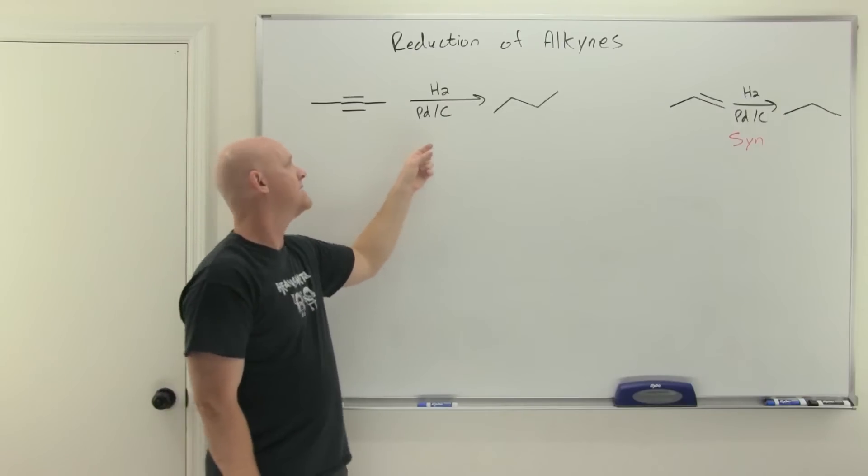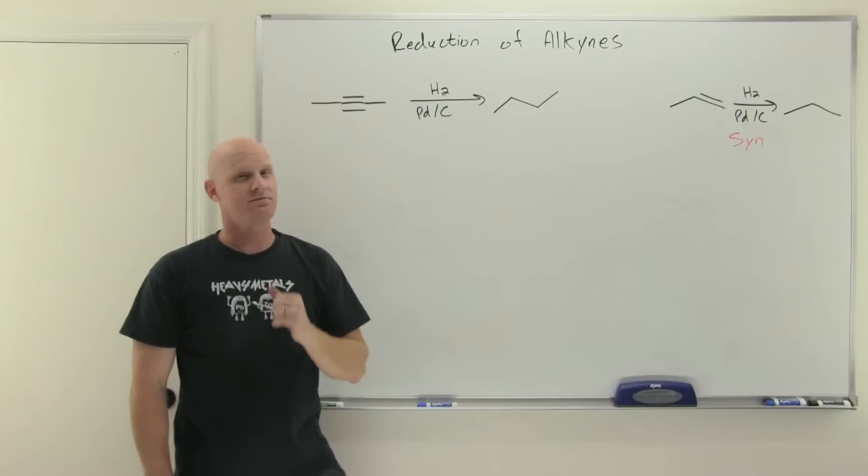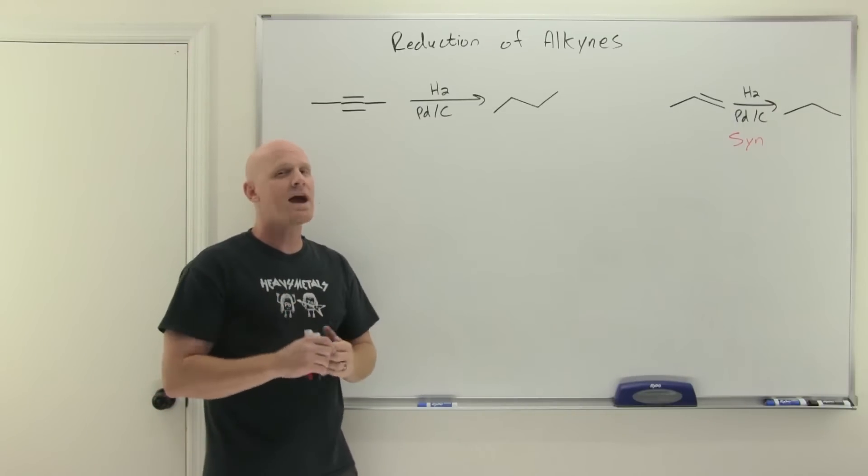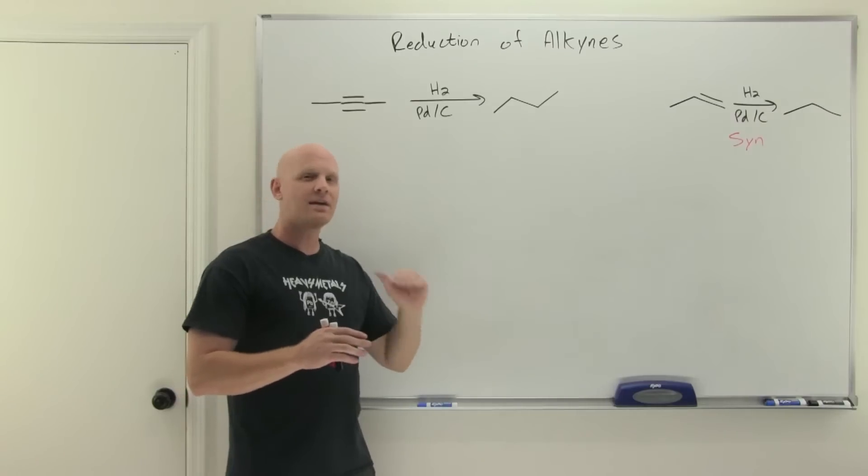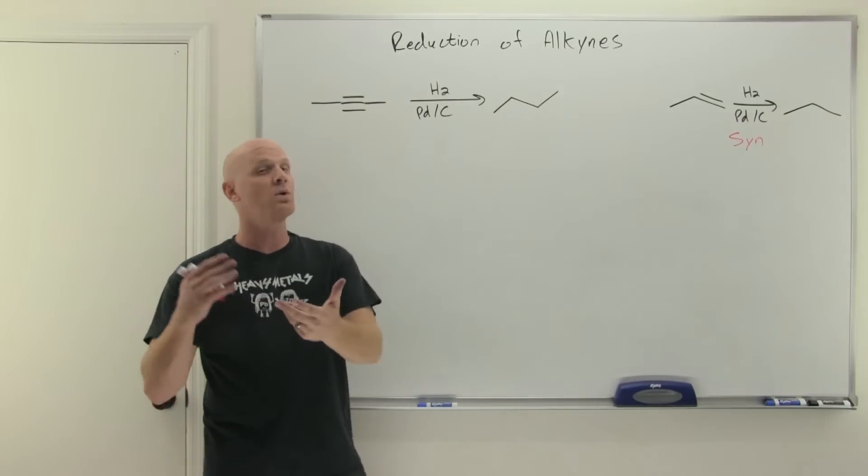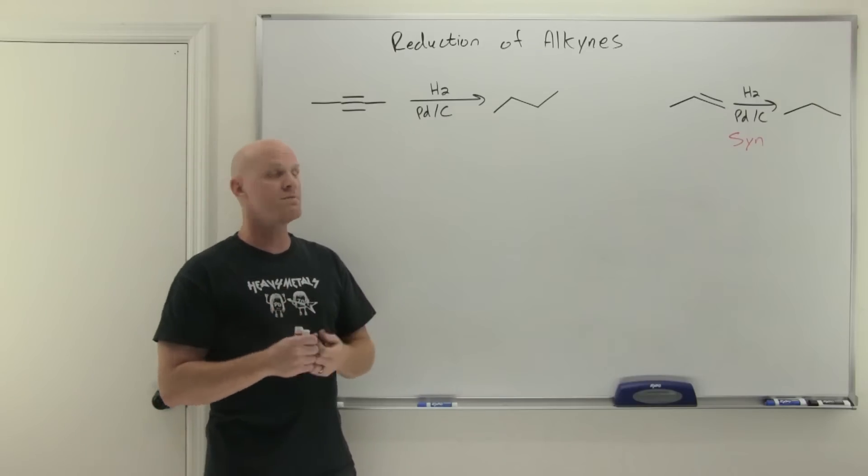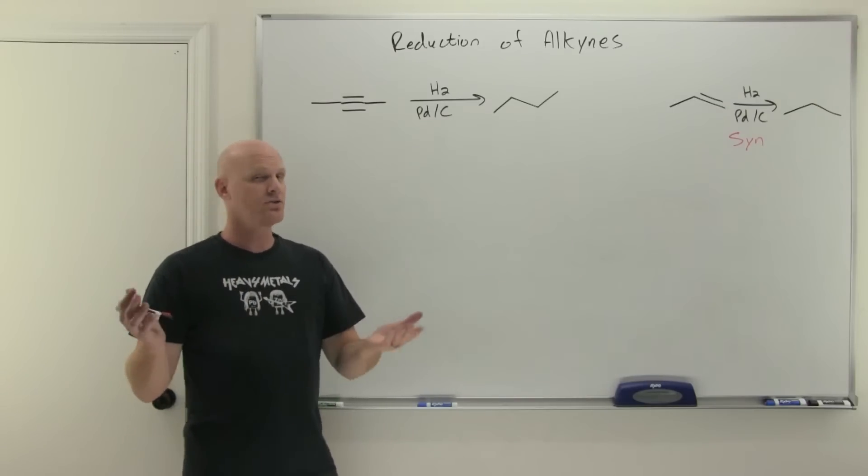However, it turns out that the process of turning the alkyne to the alkene is more exothermic than turning the alkene into the alkane. Because that first step is more exothermic, we can actually poison our catalyst in such a way that the catalyst will still be reactive enough to react with the more exothermic alkyne reaction but not reactive enough to perform the alkene reaction, ultimately stopping us at the alkene.